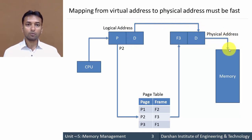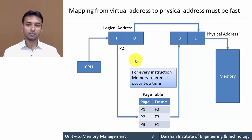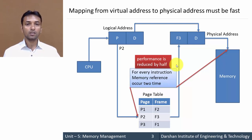The problem here is that for every instruction the memory reference occurs twice — once to access the page table and once to access the actual memory location. This reduces performance by half because instead of referencing memory once, we are referencing it twice.